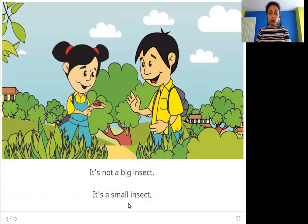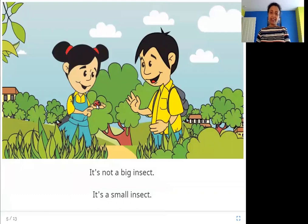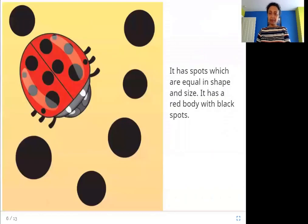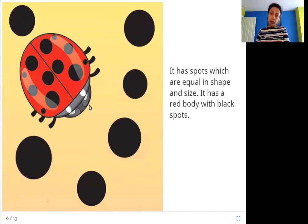It's a small insect. It has spots which are equal in shape and size. It has a red body with black spots. In this picture you can see the lady bird in more detail — a red colored body with black spots.